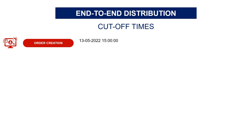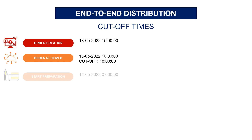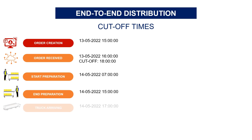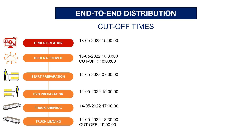What is impacting your end-to-end lead time? Let's start with cut-off times. For example, the distribution planner creates an order at 3 pm. The order is then transmitted, prepared, packed, and ready to be shipped in the warehouse. Now you face the first cut-off time: if your shipment is not ready at 7 pm, you will miss the truck and you'll have to wait 24 hours.